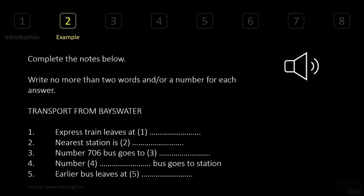Section 1: you will hear a conversation between a clerk at the inquiries desk of a transport company and a man asking for travel information. First you have some time to look at questions one to five. Now we shall begin — answer the questions as you listen because you will not hear the recording a second time. Listen carefully and answer questions one to five.